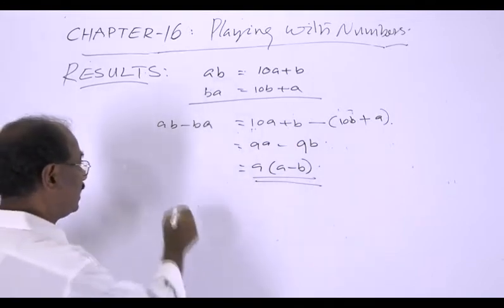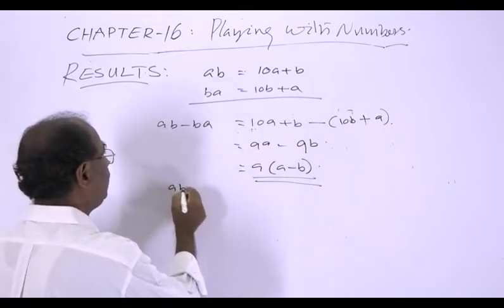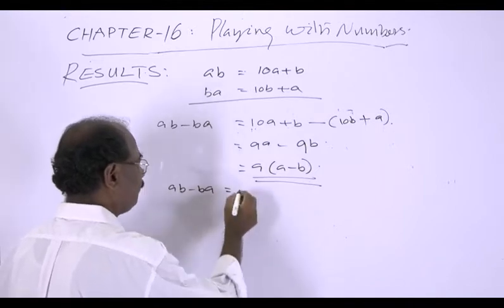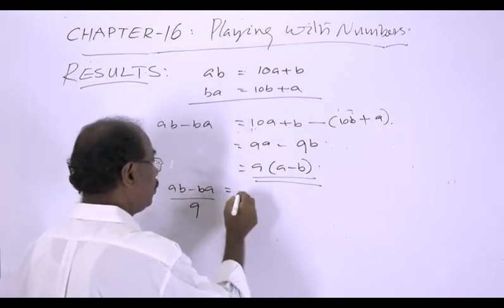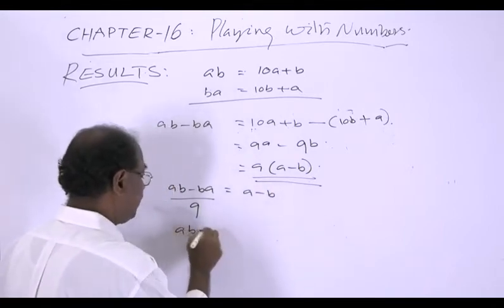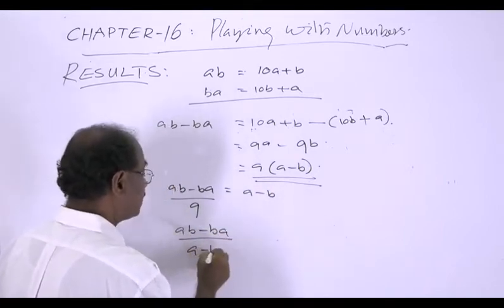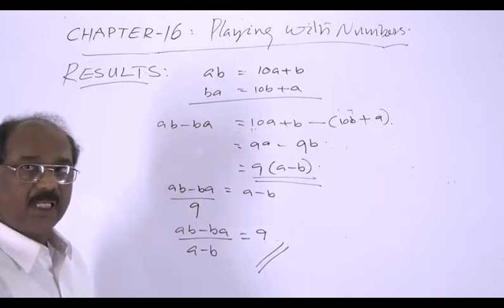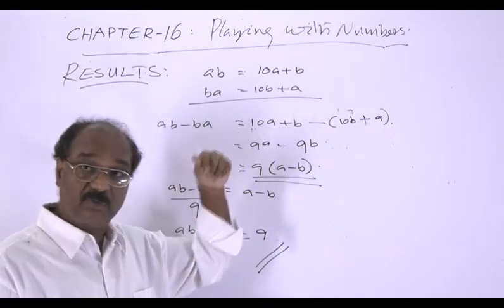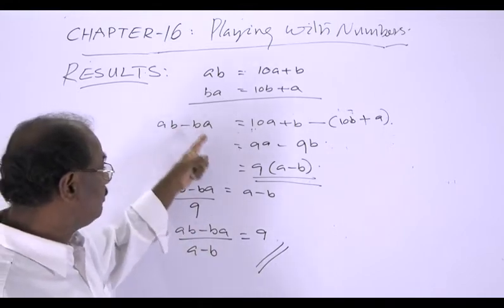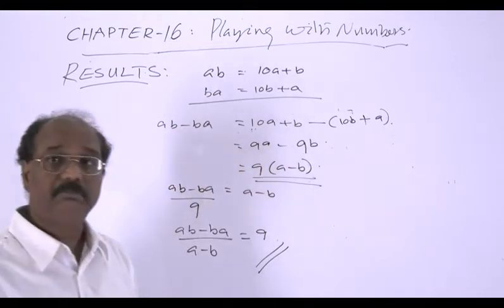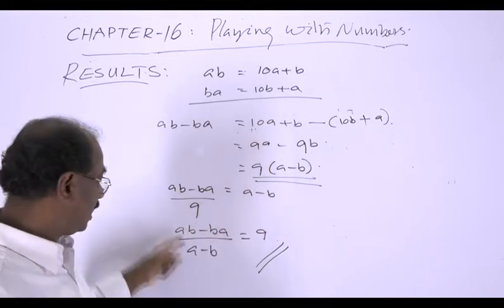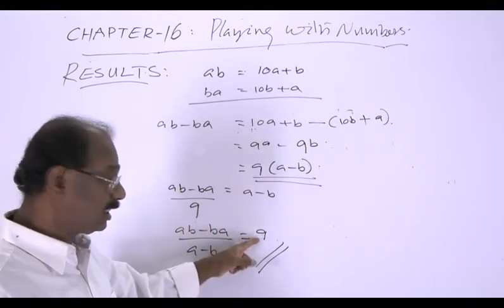From this we see that AB minus BA equals 9 times A minus B. Similar to the previous case with the sum, AB minus BA is a multiple of 9 and A minus B. When AB minus BA is divided by 9, the quotient is A minus B, and when the difference is divided by A minus B, the quotient is 9.